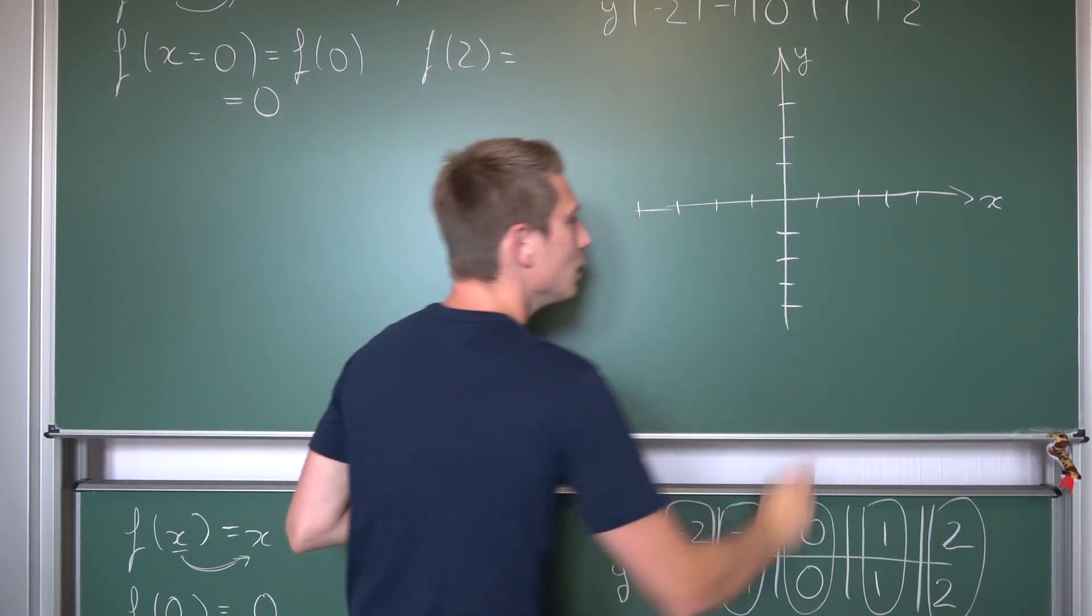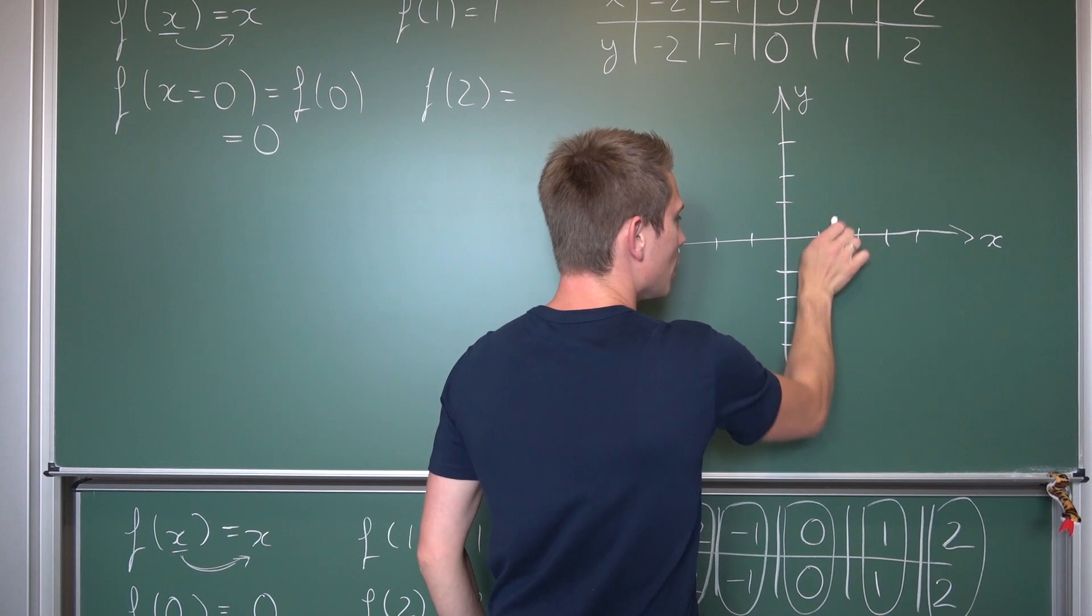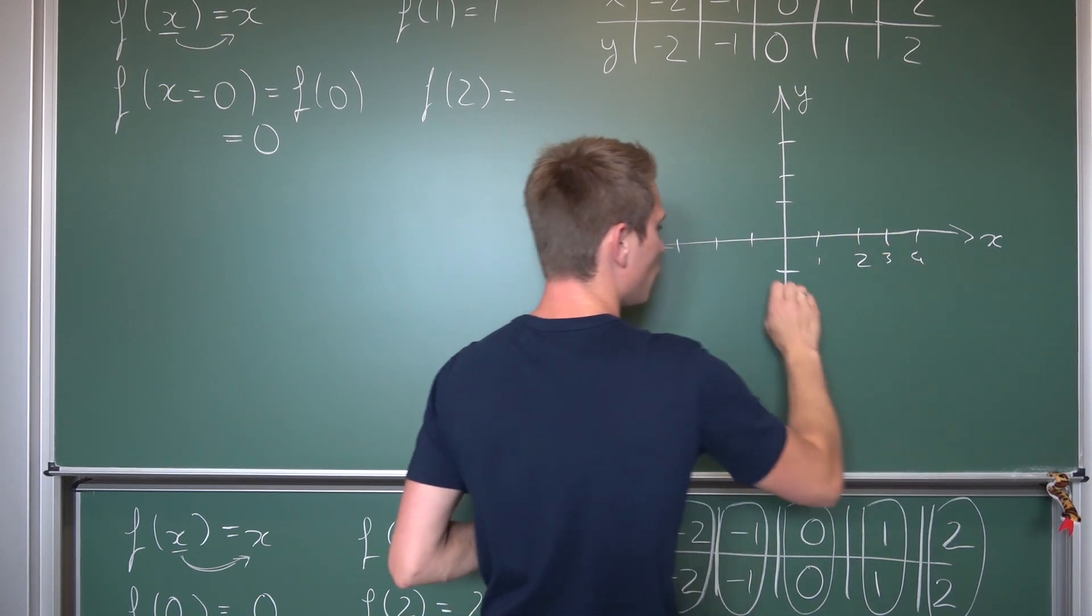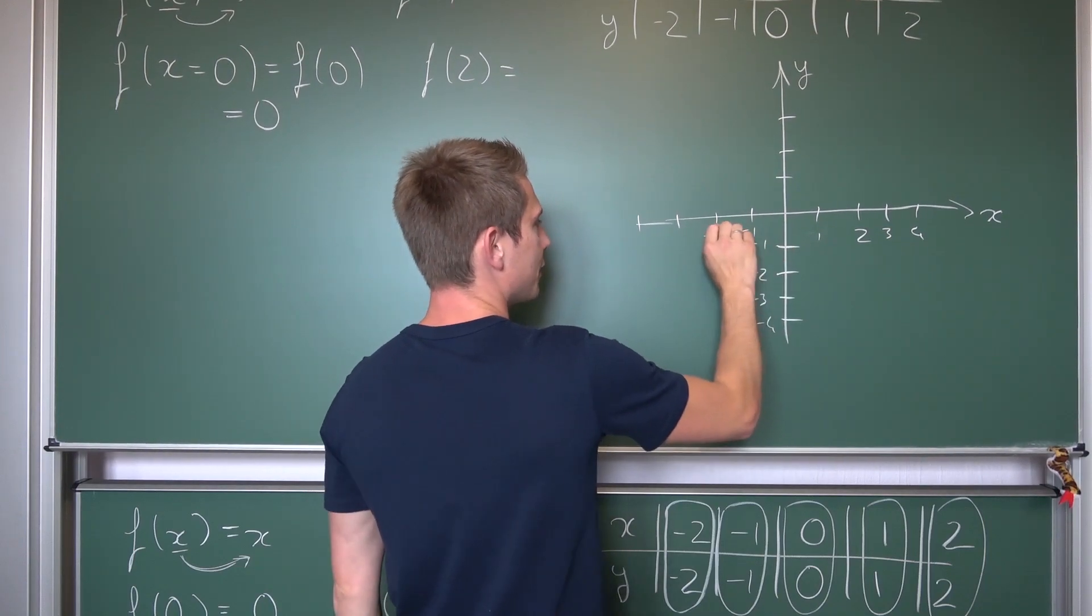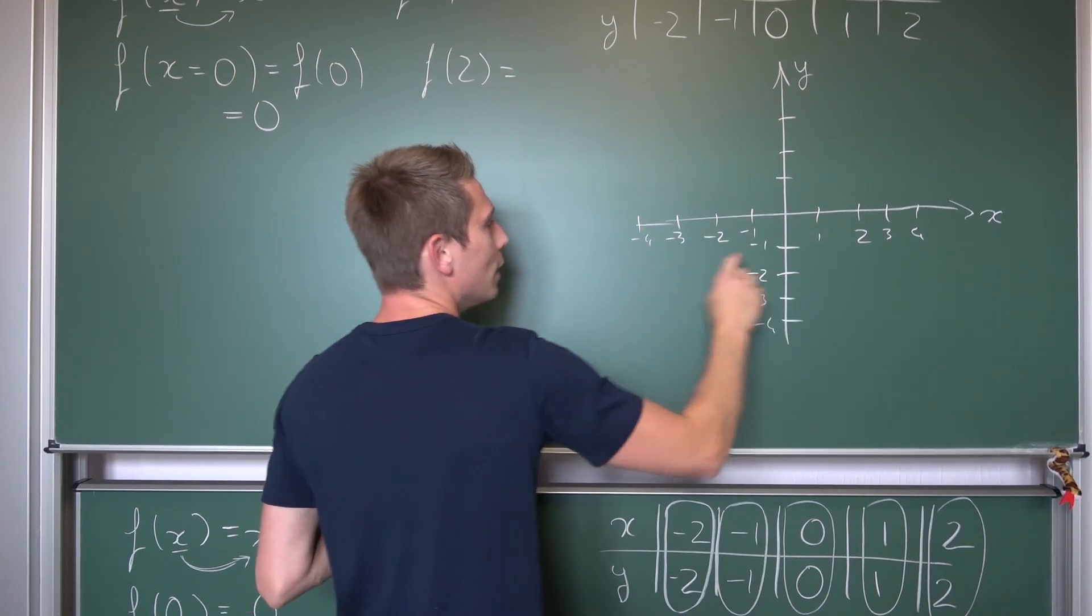1, 2, 3, 4. And now we are going to put some numbers on here. So 1, 2, 3, 4, negative 1, negative 2, negative 3, negative 4, negative 1, negative 2, negative 3, negative 4, and last but not least 1, 2, 3, and then 4.